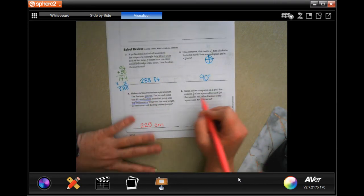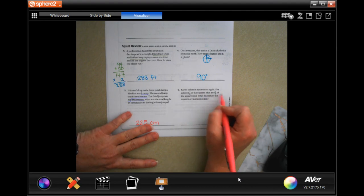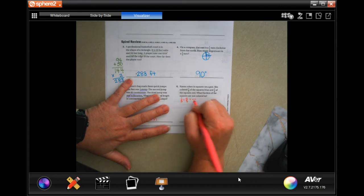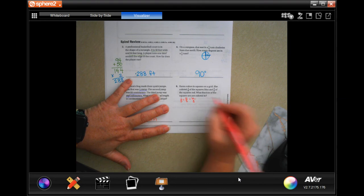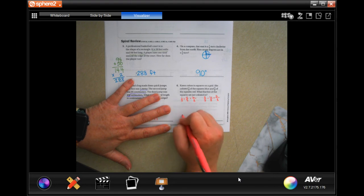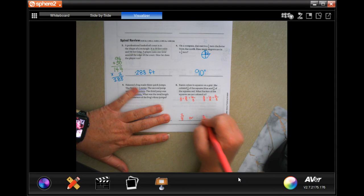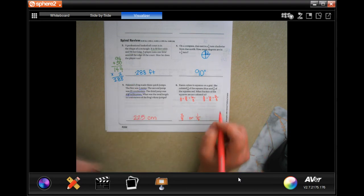All right. Karen colors in squares on the grid. She colors an eighth of the square blue and five eighths of the square red. What fraction of the squares are not colored in? So one eighth plus five eighths. Well, the denominator stays the same, and one plus five is six. So now I have eight eighths, which would be all of them. Take away the six eighths. Denominator stays the same, and eight minus six is two. So we could say two eighths, but two eighths can be reduced. Two goes into two once, and two goes into eight four times. So you can do either one of those.